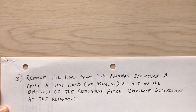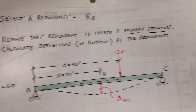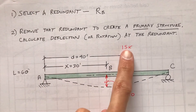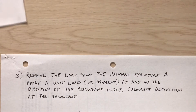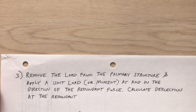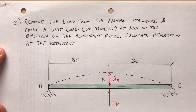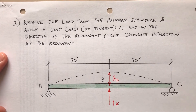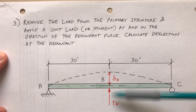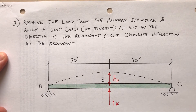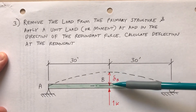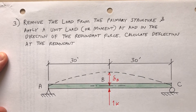Remove the load from the primary structure — take out that 15-kip load — and apply a unit load at and in the direction of the redundant force. So I take off the 15 kips and apply a 1-kip load at point B pushing up. This will create a deflection delta sub B. I want to calculate what that delta sub B is.